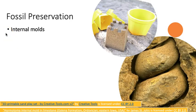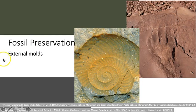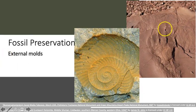If the interior space of an organism is filled with sediment, it can lithify to make an internal mold of the shape of the organism. An external mold is the result of an organism leaving an impression in soft sediment. After leaving the impression, the organism may be transported or dissolved away. Fossil trackways, such as dinosaur footprints, are also a type of external mold.